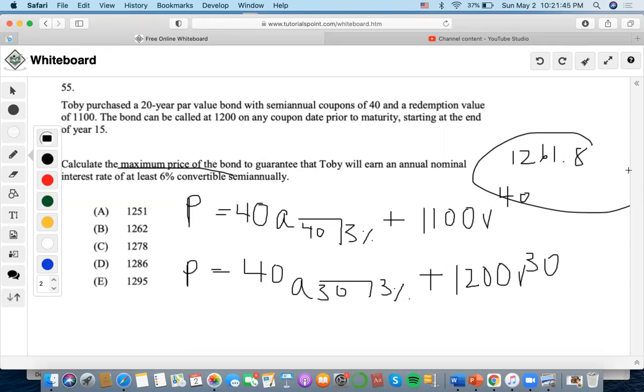The second part is 40 payment, 30 number of years, 3 interest rate, $1,200 as future value, compute present value, $1,278.40.